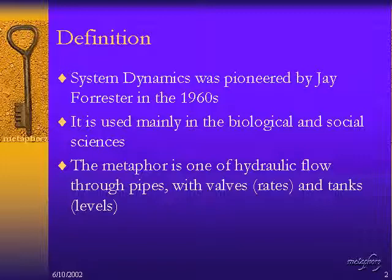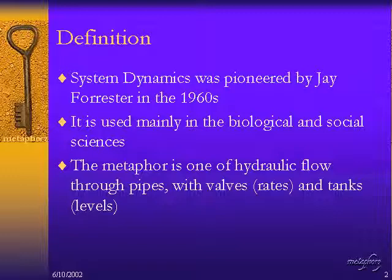The main difference between System Dynamics and most other modeling types is that System Dynamics incorporates more than just a specification of a model type. Instead, it is an engineering approach to creating a particular type of model. System Dynamics tells one where to begin in the model creation process and then incrementally how to proceed to create the final model in subsequent steps.